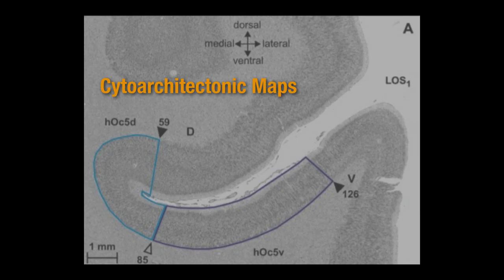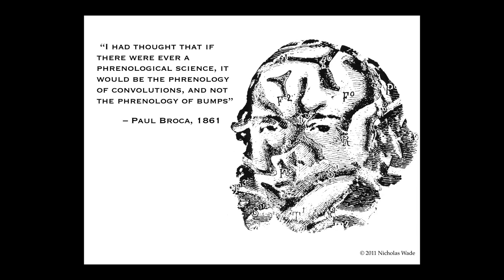This really starts with the development of cytoarchitectonic maps, going back to the late 19th century. Paul Broca, a physician who first convincingly associated damage to a brain area — now called Broca's area — with a functional deficit, wrote: 'If there were ever a phrenological science, it would be the phrenology of convolutions, not the phrenology of bumps.' Phrenology involved feeling bumps on the skull. Broca's point was that the convolutions of the brain itself reflect some level of organization and localization of function.